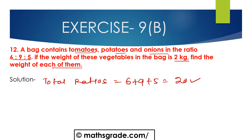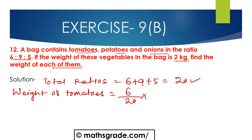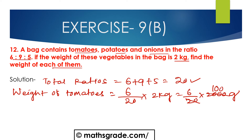We have to find the weight of tomatoes, potatoes, and onions. Weight of tomatoes is 6 divided by 20, multiplied with 2 kg. Since 1 kg is 1000 g, 2 kg is 2000 g. So 6 divided by 20 multiplied with 2000 g — cancelling 20 and 2000, since 20 multiplied by 100 is 2000 — gives 6 multiplied by 100, which is 600 g. Weight of tomatoes is 600 g.